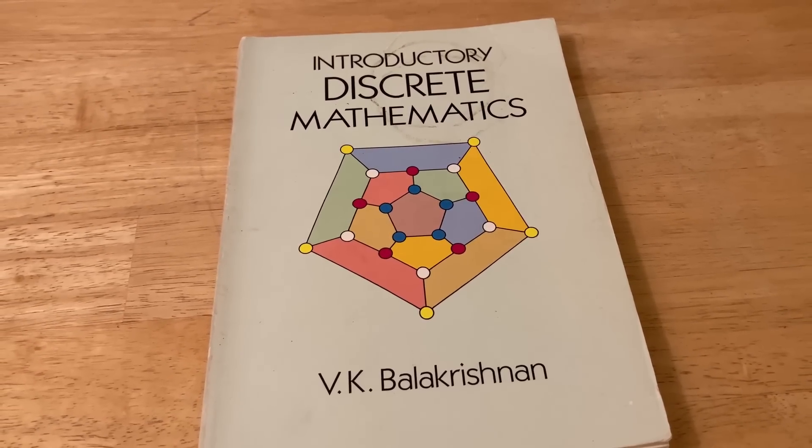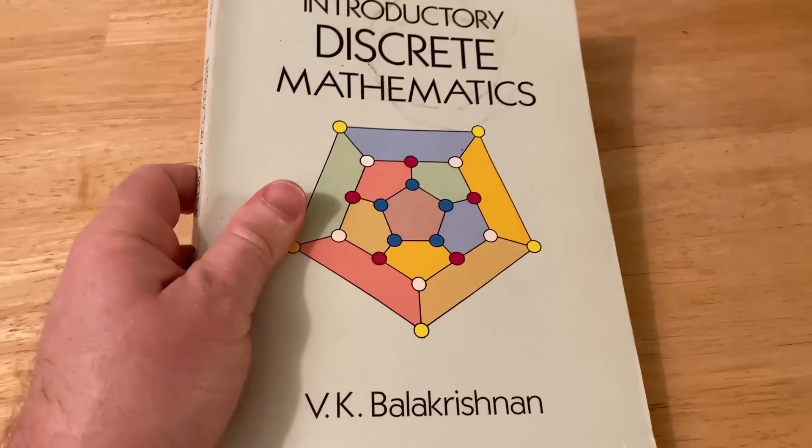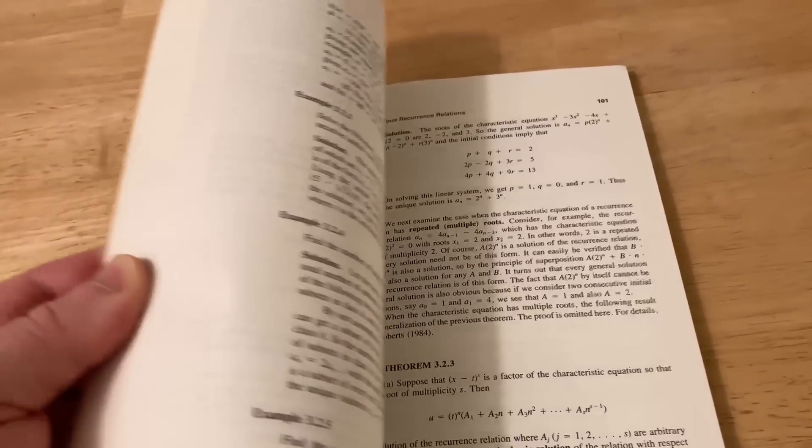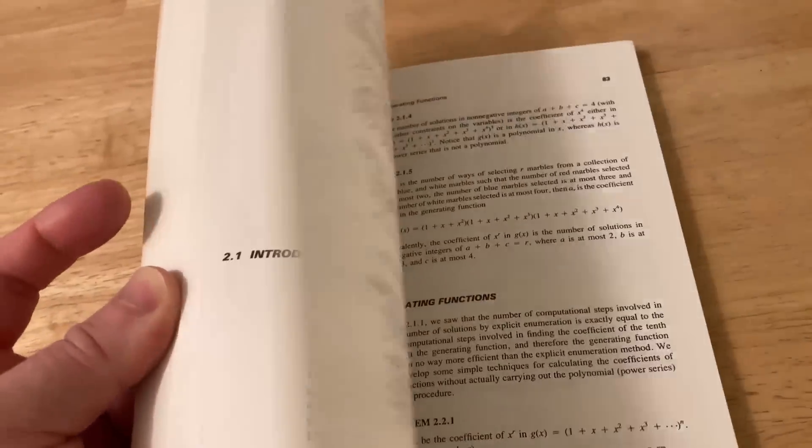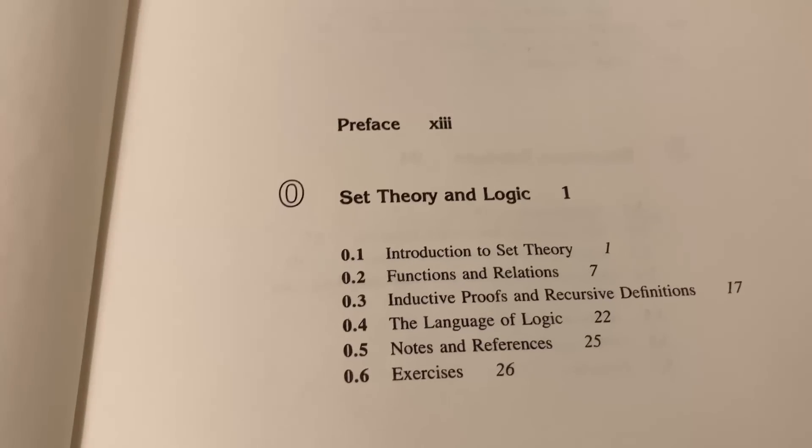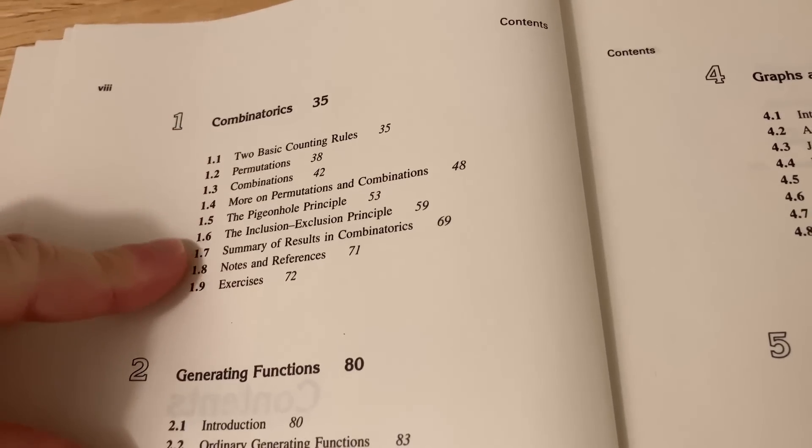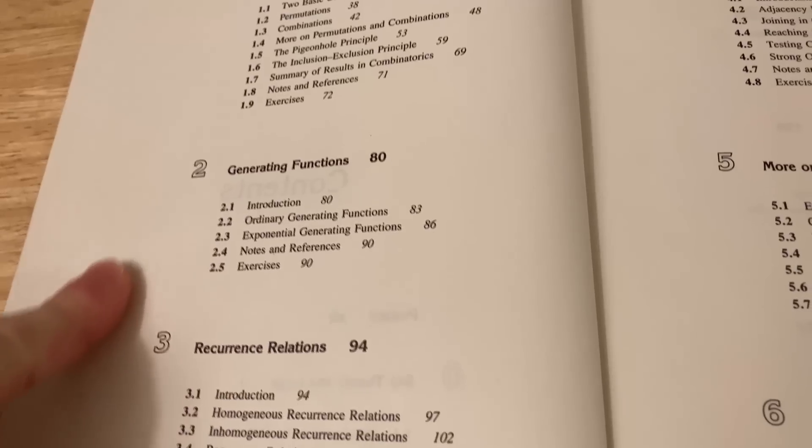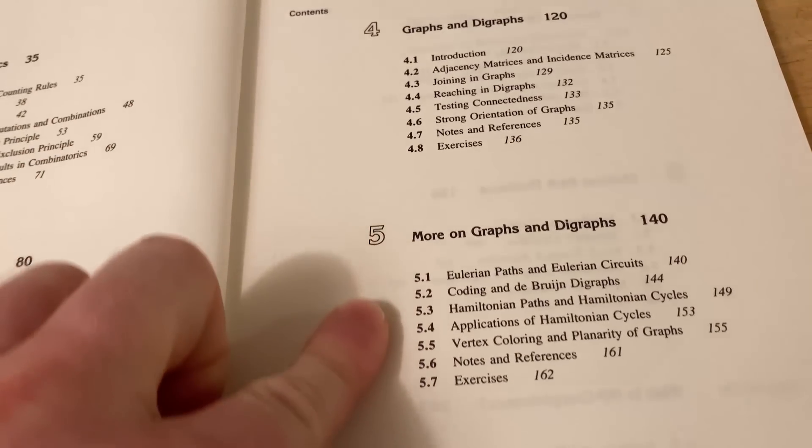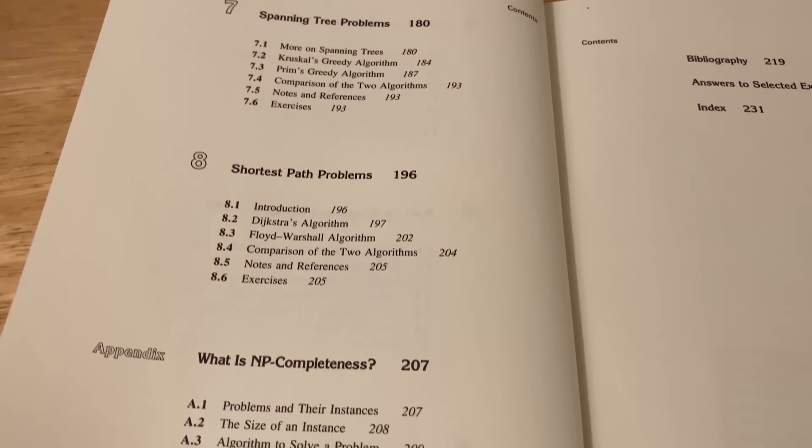This next book I was reading just the other day. It's called Introductory Discrete Mathematics by Balakrishnan, and I've had this book for quite some time and it's actually really really good. It has really clean explanations and I think it's one of the better discrete math books out there. Here's a super quick look at the contents: it starts with set theory and logic, then it goes into combinatorics. I have read this entire chapter, generating functions, recurrence relations. I've read some of this.